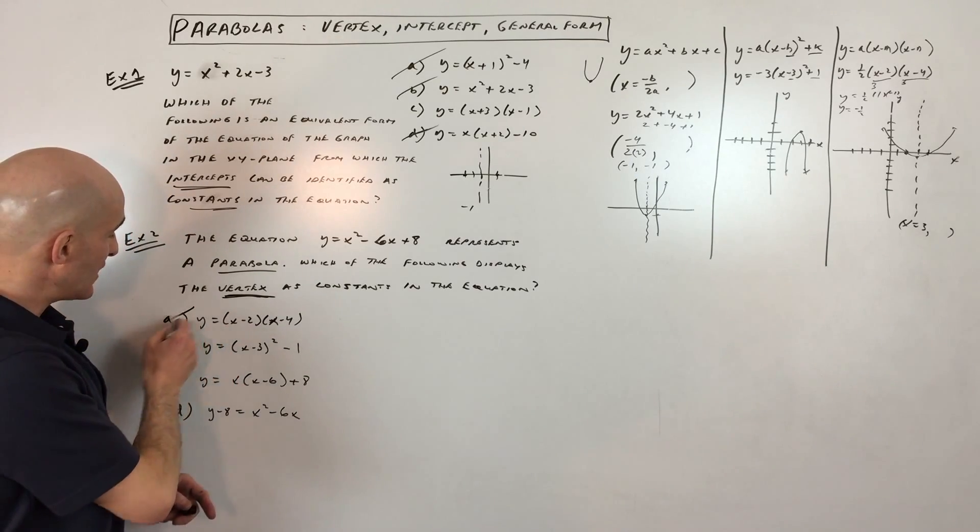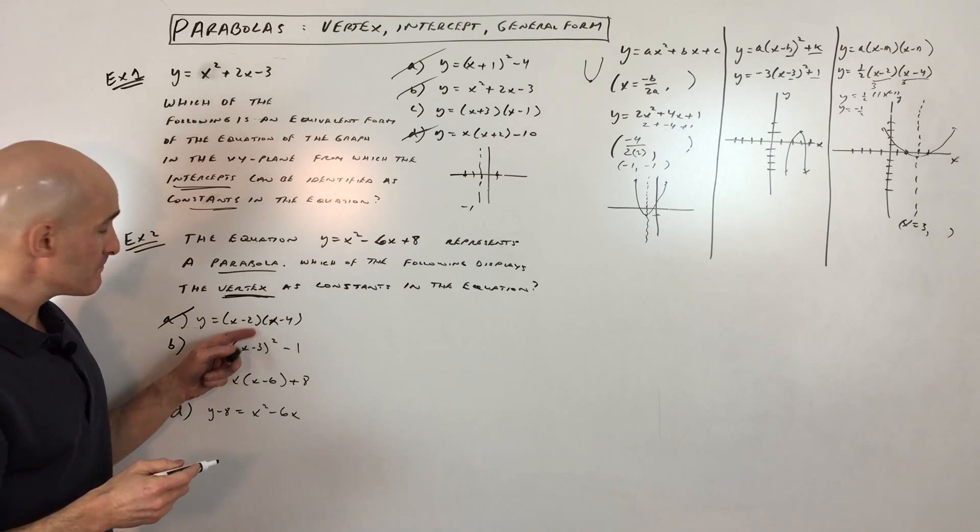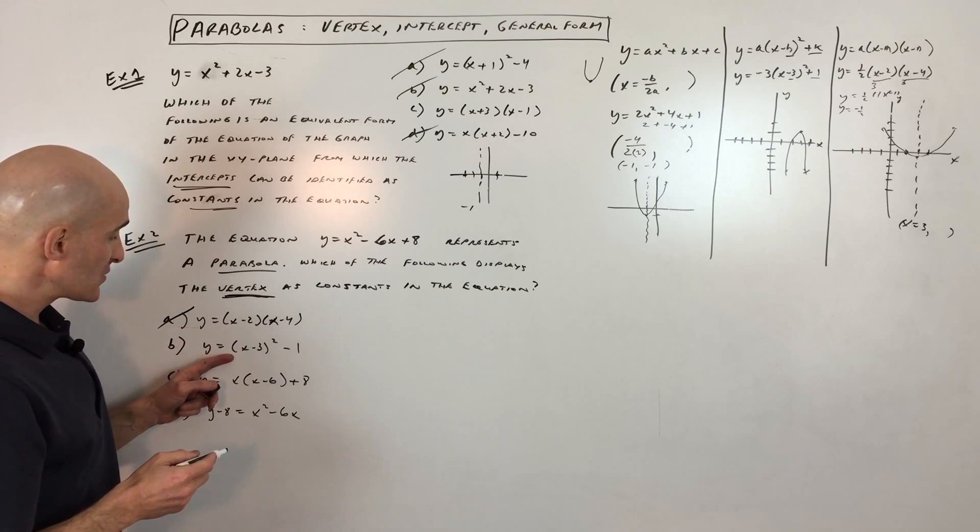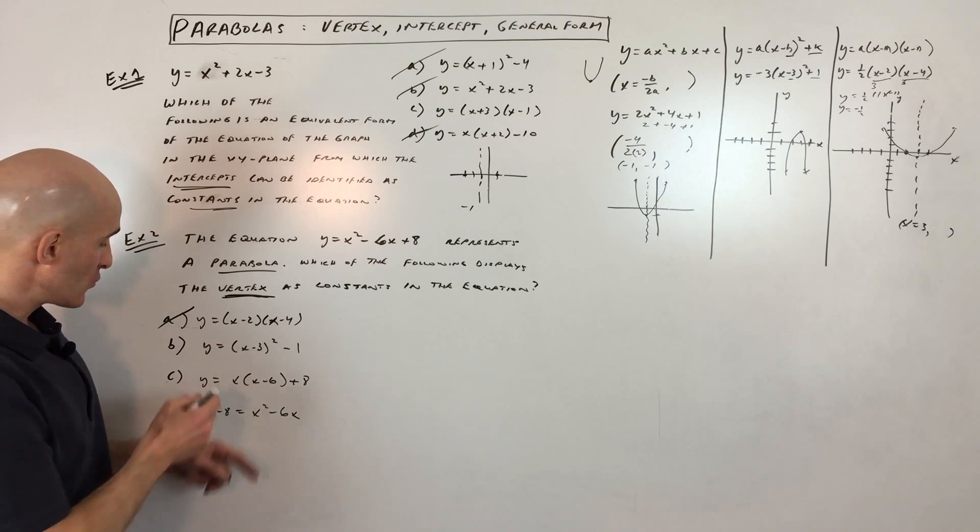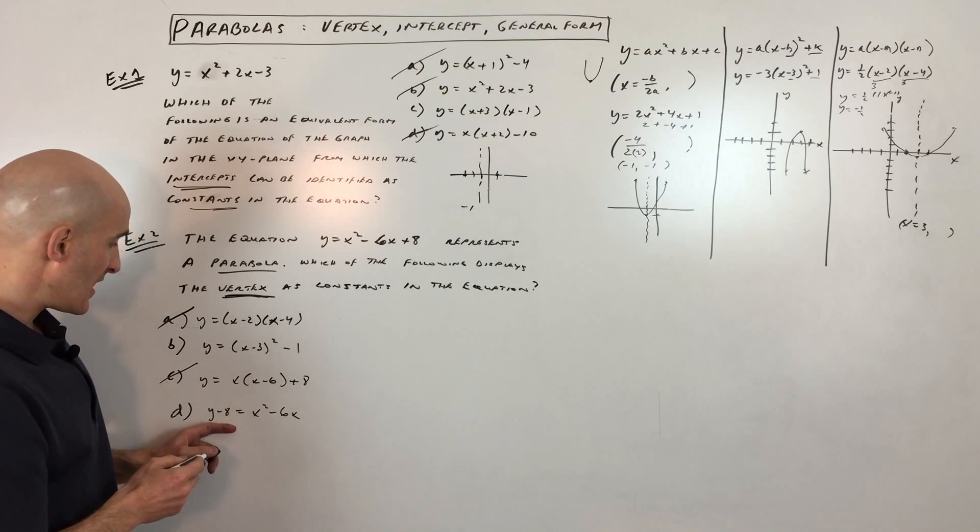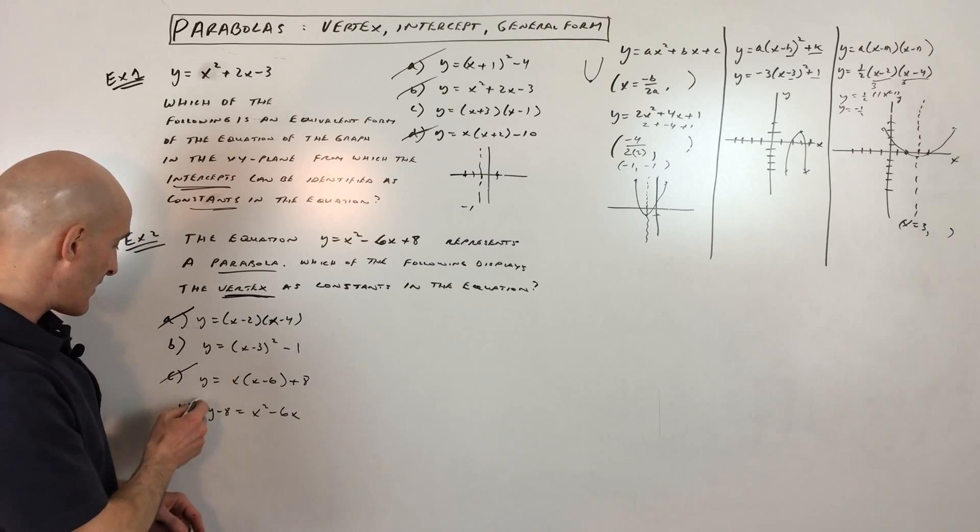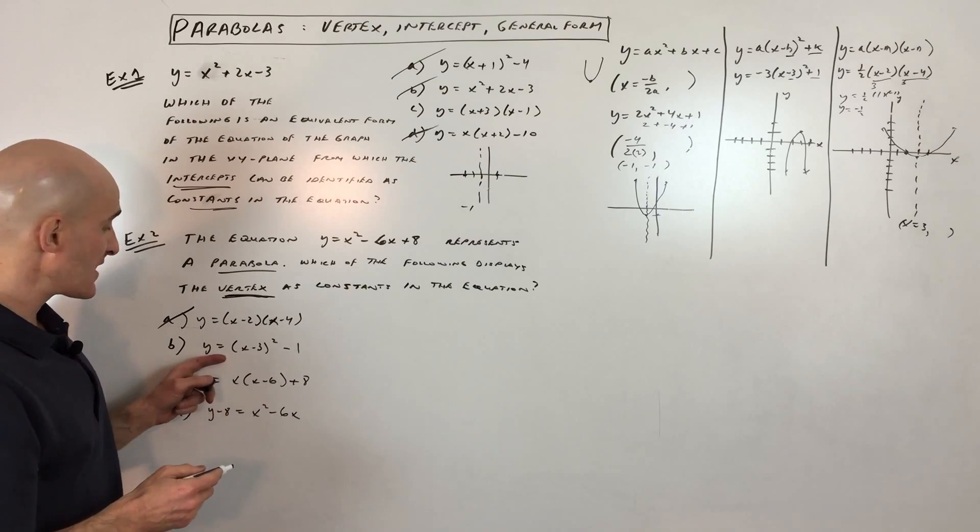Well, first of all, this first one looks like it's in the intercept form. See how it's the factored form? So that's not it. This one looks like it's in the vertex form. This one, I'm not sure what form this even represents. And this one, again, I'm not sure what that even represents. So it looks like it's letter B, but I would confirm by doing a couple different things.